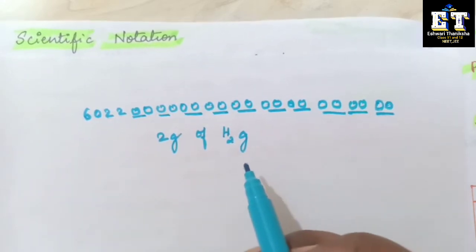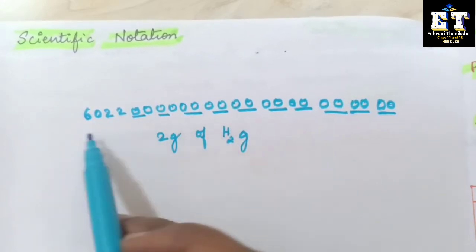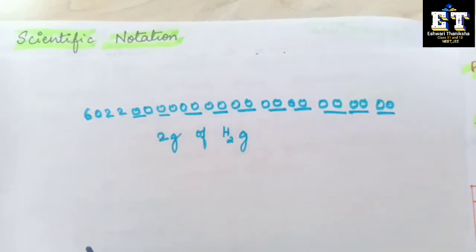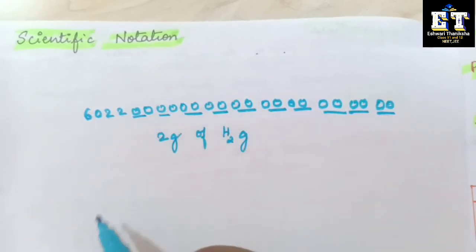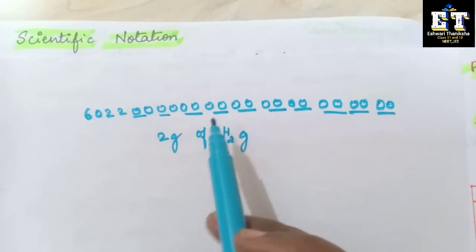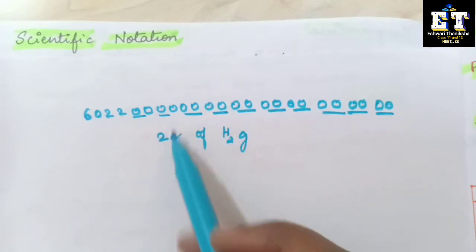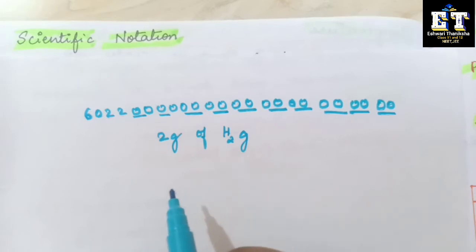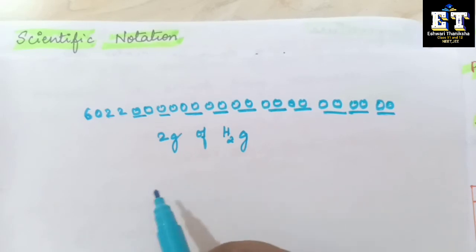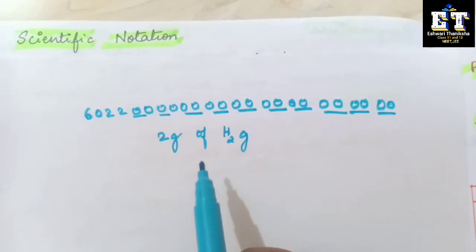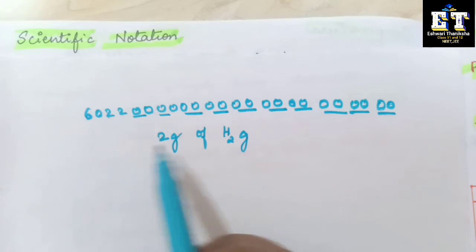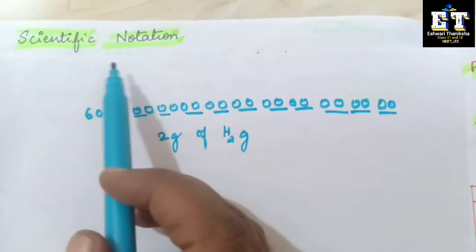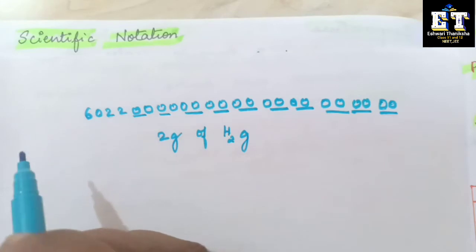So if you want to calculate, adding or multiplying such a huge number becomes very, very difficult. If I take another number and want to multiply, think how difficult it will be for us to add, multiply, or divide the numbers. In order to make calculations simple, we will be using scientific notation.